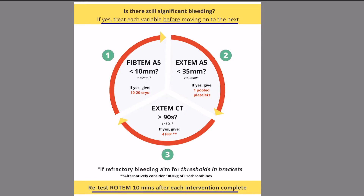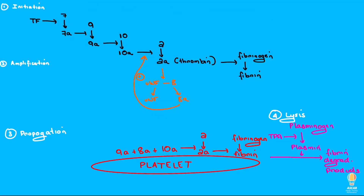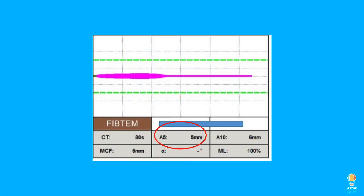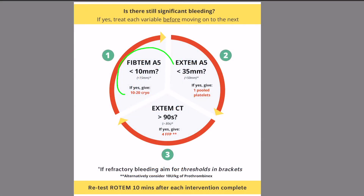Step 1: check your FibTem A5. This is the amplitude of your clot at 5 minutes and checks whether enough fibrinogen is available for the propagation phase. The FibTem assay isolates fibrinogen function by using a platelet inhibitor. Remember, fibrinogen deficiency develops earlier than other deficiencies of coagulation factors. If it is under 10mm, many guidelines would recommend 10-20 units of cryoprecipitate. As a general rule, 5 units of cryo would be expected to raise the FibTem A5 by 2mm.